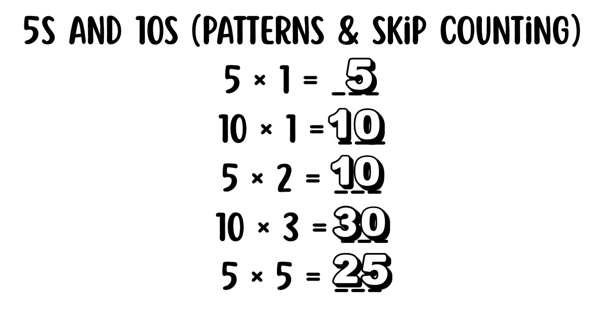And let's not forget our fives and tens and our patterns. Five times one equals five. Ten times one equals ten. Five times two equals ten. Ten times three equals thirty. And five times five equals twenty-five. Easy, huh?